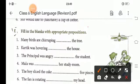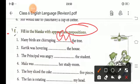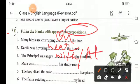Now, here, you have to fill this sentence with the preposition. Many birds are chirping on the tree. Karthik was hovering near the house. The principal was angry, either you can write with or you can write at. With the student or at the student. Malala was in her study room.